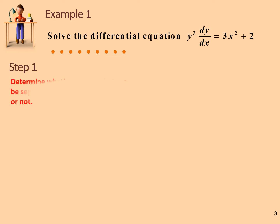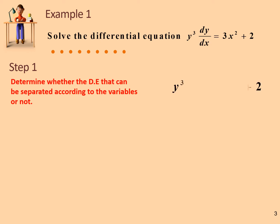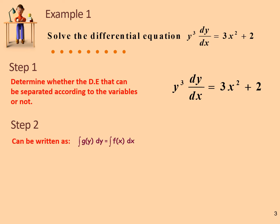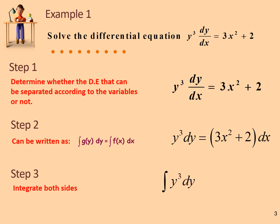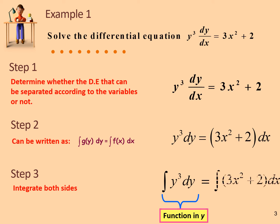Step 1: Determine the DE that can be separated according to the variables. Step 2: It can be written as integrate G(Y) dY equal integrate F(X) dX, giving us Y³ dY equal (3x² + 2) dX. Step 3: Integrate both sides — integrate Y³ dY, which is a function in Y, equal to integrate (3x² + 2) dX, a function in X.